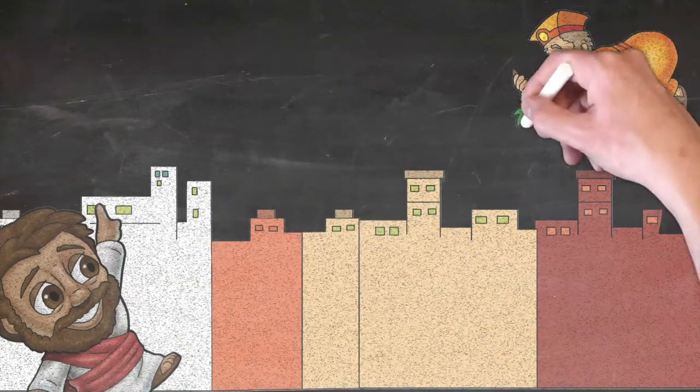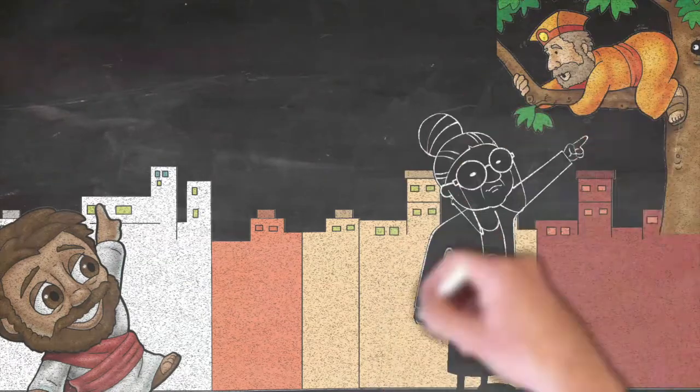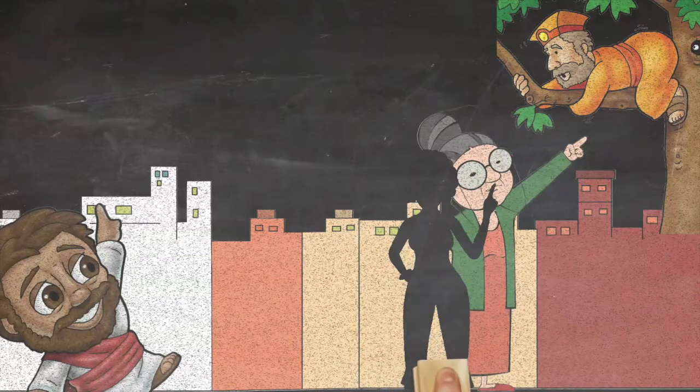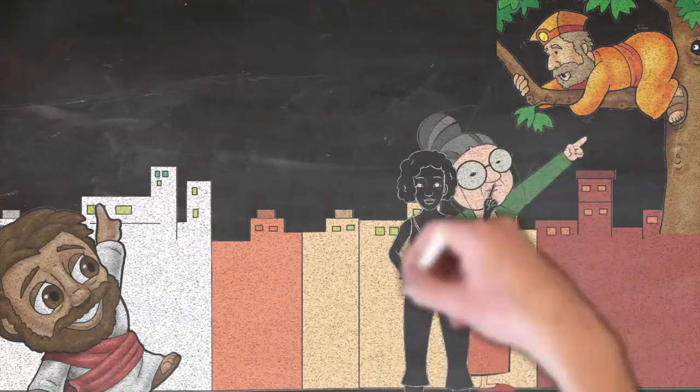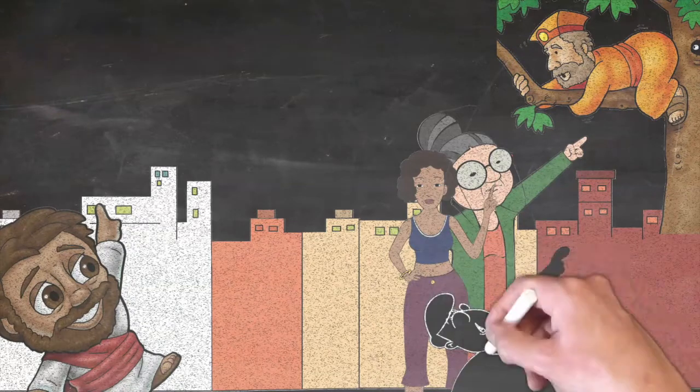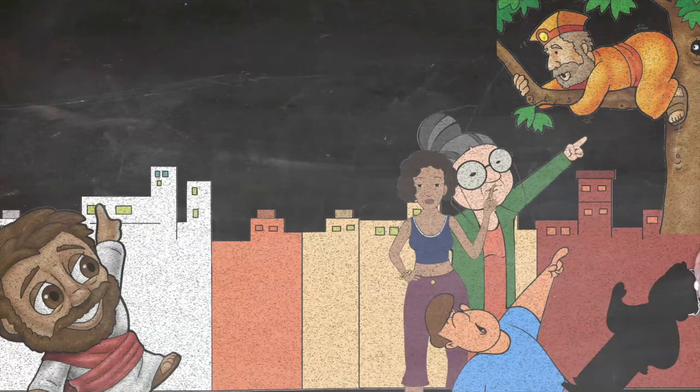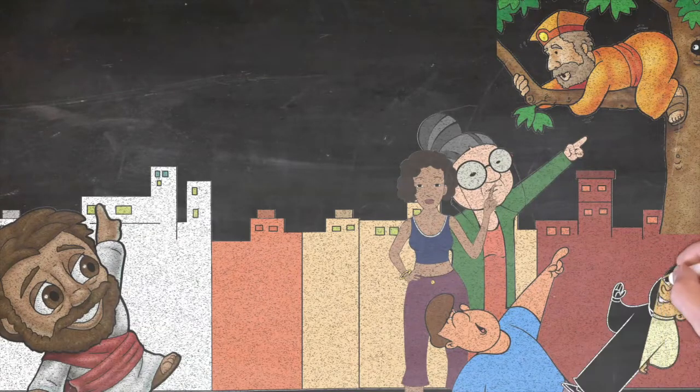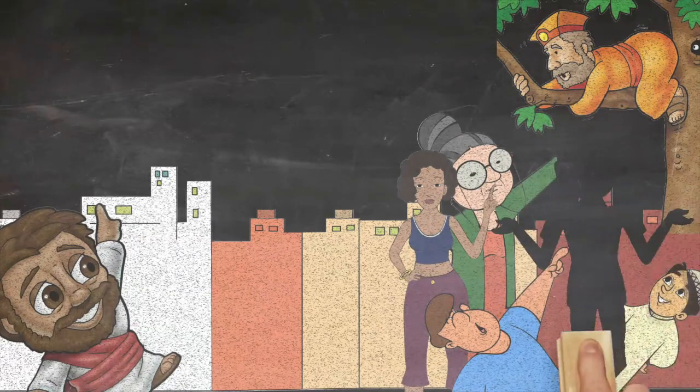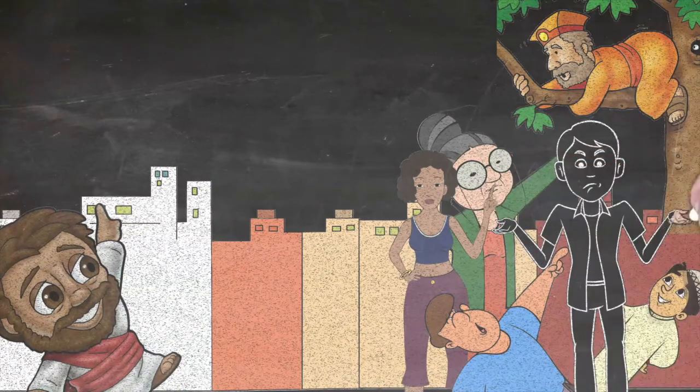So there is Zach, eye to eye with Jesus. There amongst this massive crowd of people. And Zach's probably thinking, why is Jesus looking at me? And as the whole crowd begins to look at him, Zach probably feels a little bit awkward. He's a fully grown man, in fine clothes, sitting in a tree.